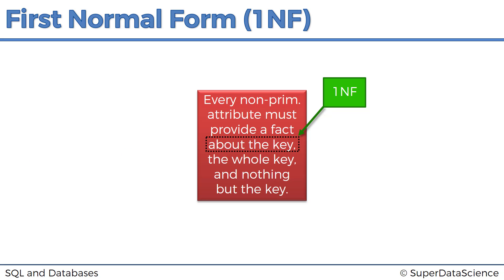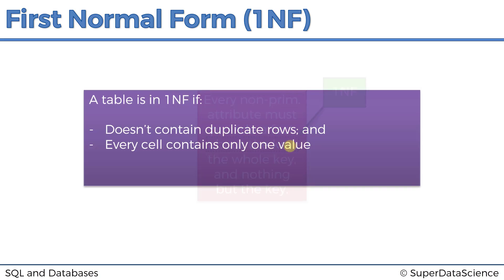I know it's a bit vague right now, but just remember the phrase and remember that 'about the key' is 1NF. Basically, it's talking about a key, which means there has to be a key. A key can only exist if there are no duplicate rows — and that will help you remember that 1NF is about not containing duplicate rows. You'll also just have to remember on your own that every cell contains only one value.